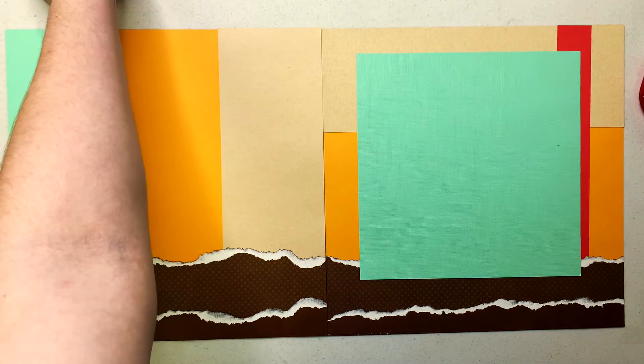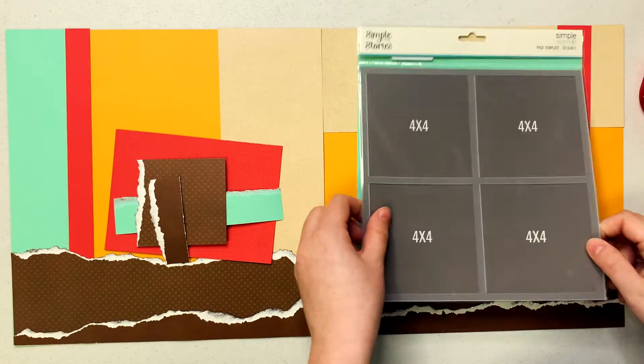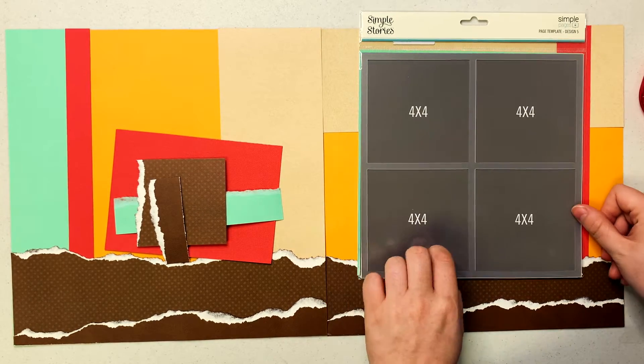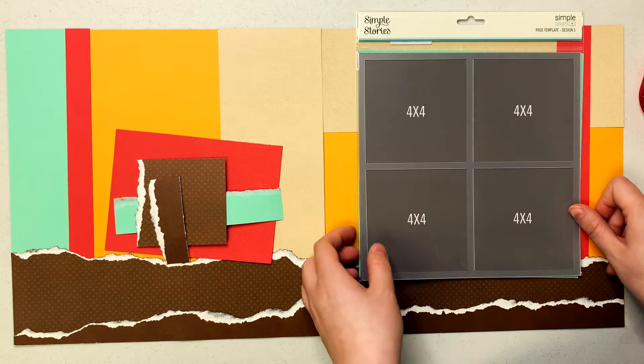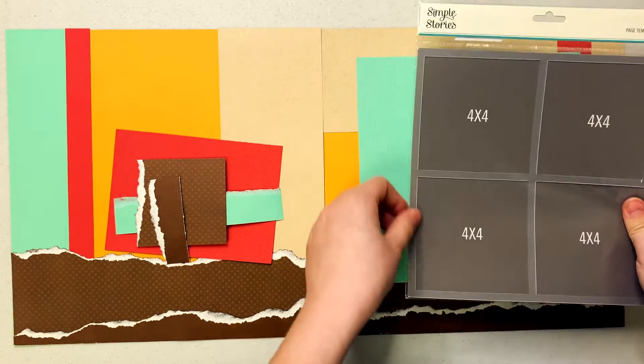On this side I have a couple different photos that I'm going to include so I did end up cutting this side with my simple stories page template. This is design number five. It is four different four by four photos and I really like this because not only does it show you what size to cut your mat by using this as a template but it also lets you cut your photos the right size.